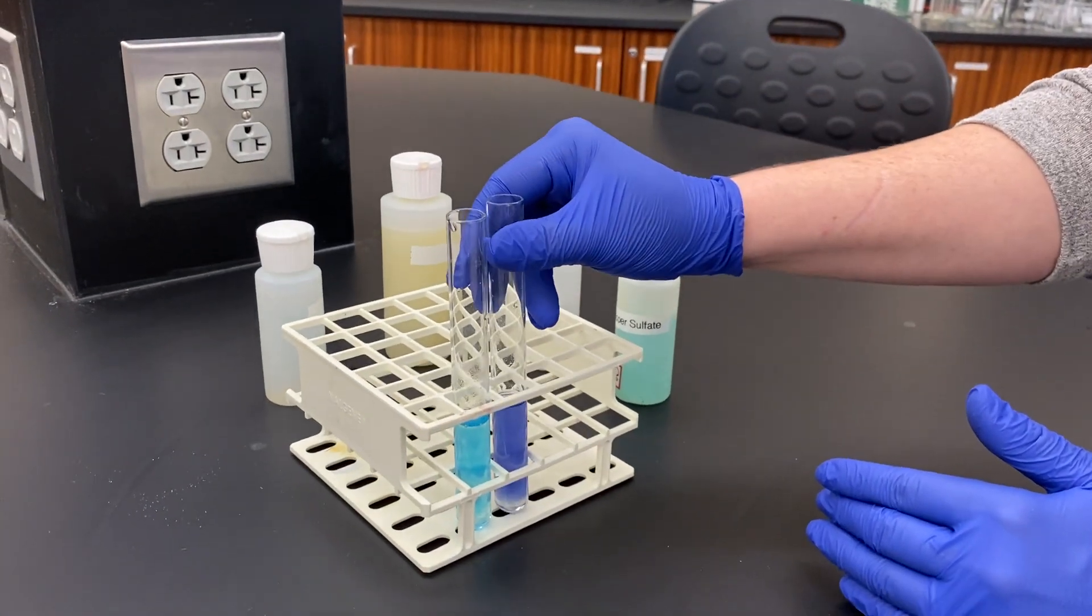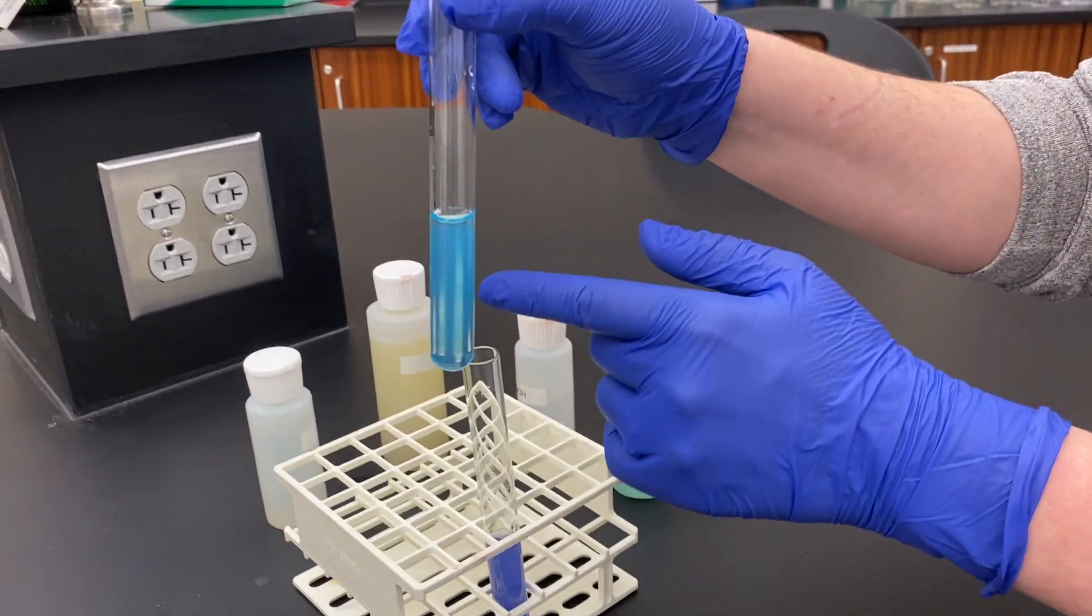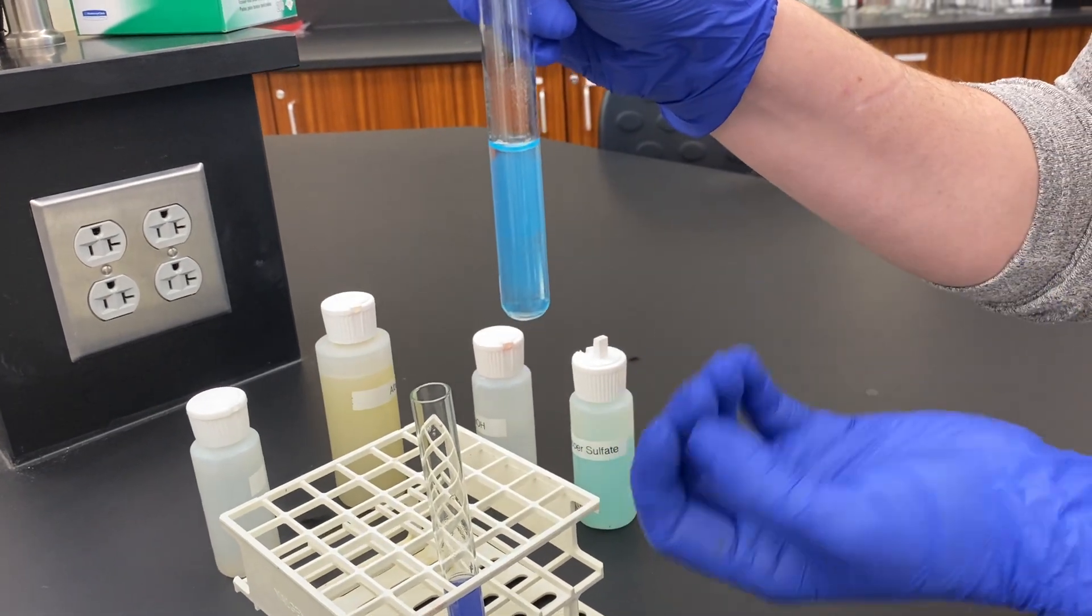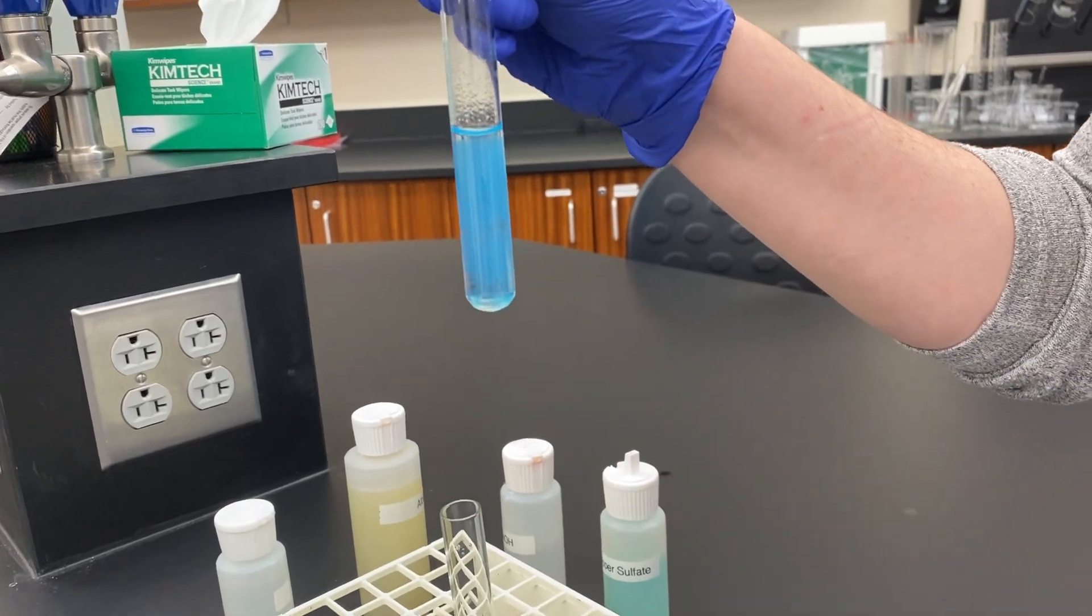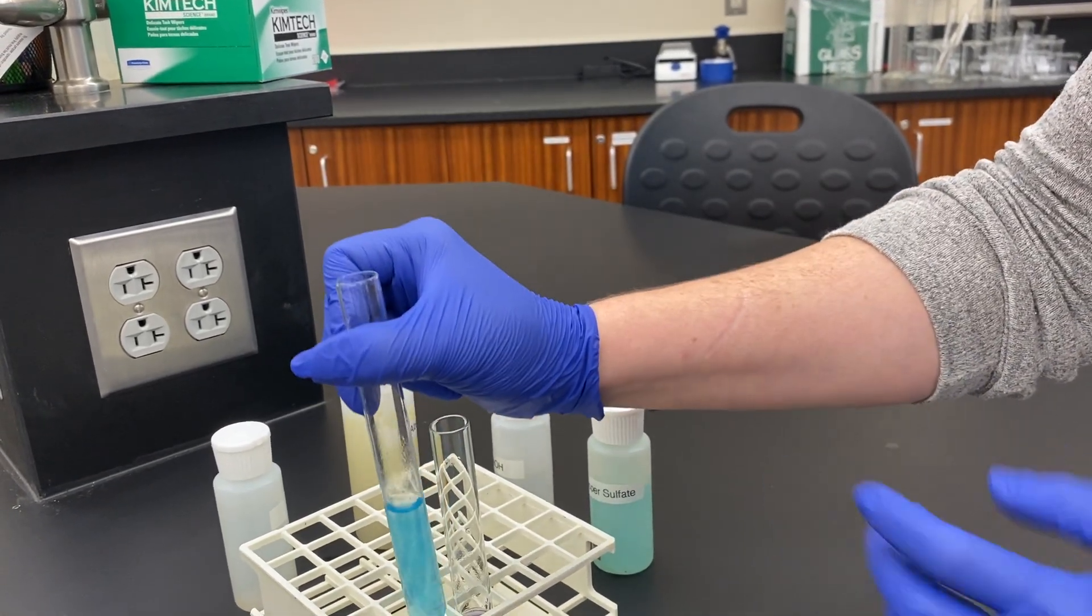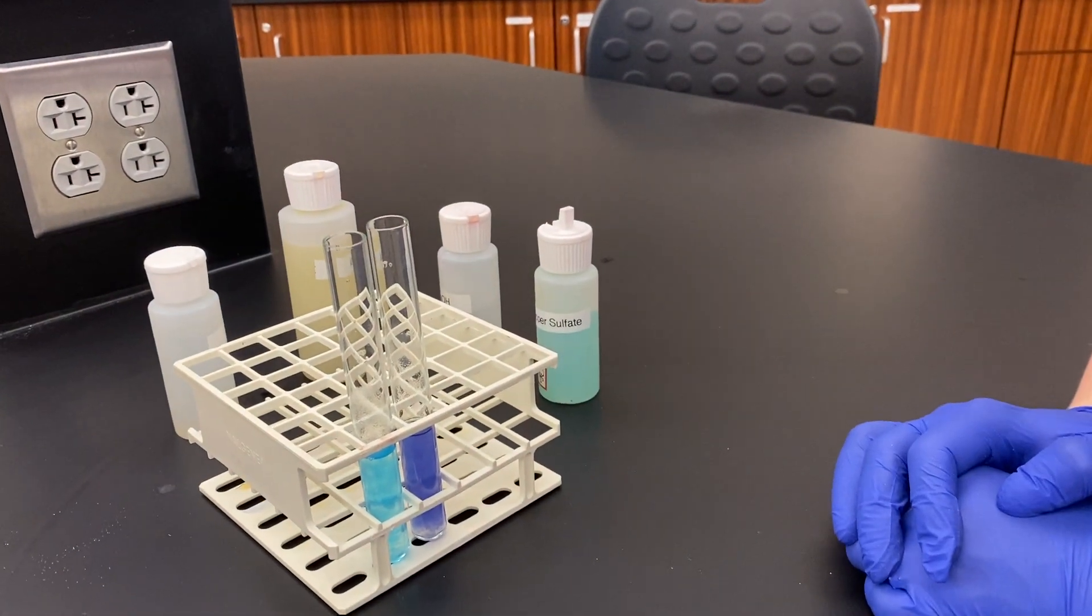So again, very clear, distinct color change between the two. You can see there are flocculates. You can see the precipitate within that solution there, and it's starting to settle a little bit on the bottom. If we were to let this go for another hour, you would see that settling of all of the precipitate on the bottom of the test tube.